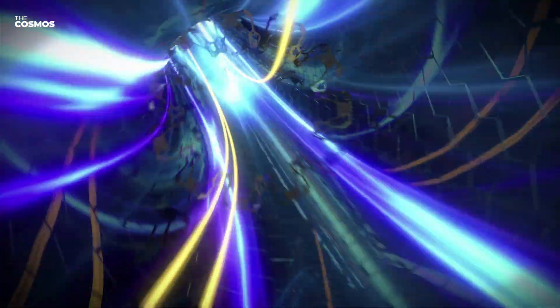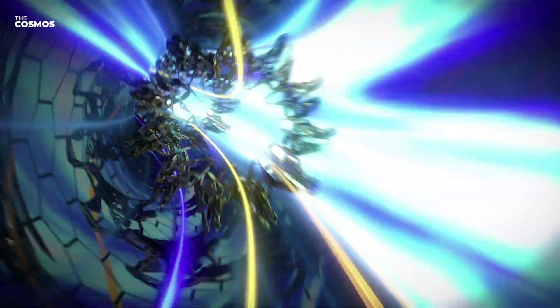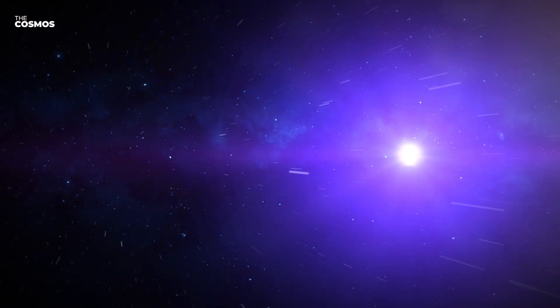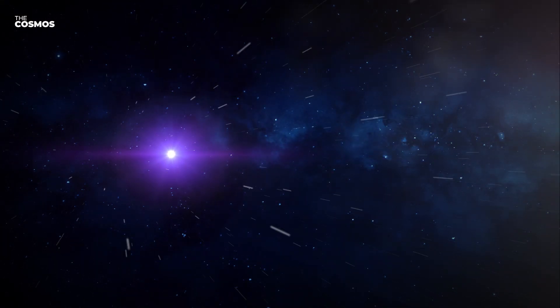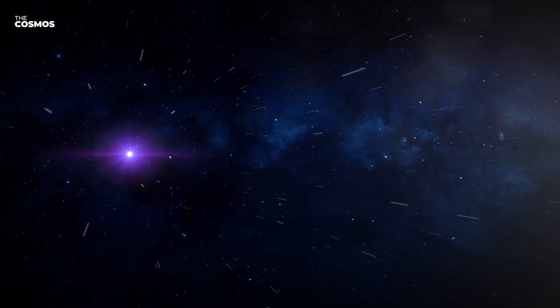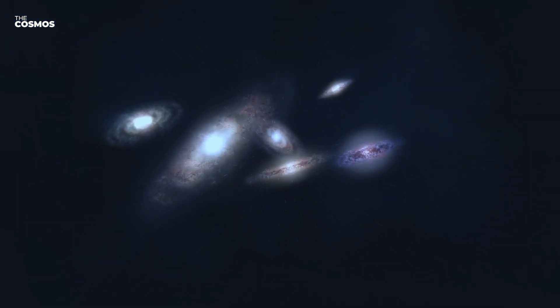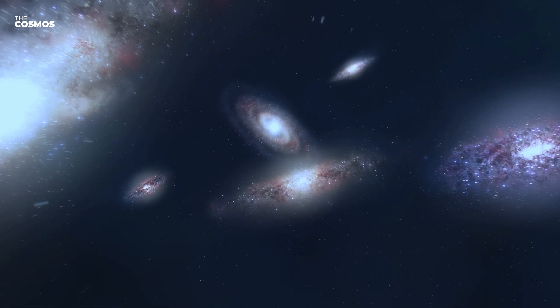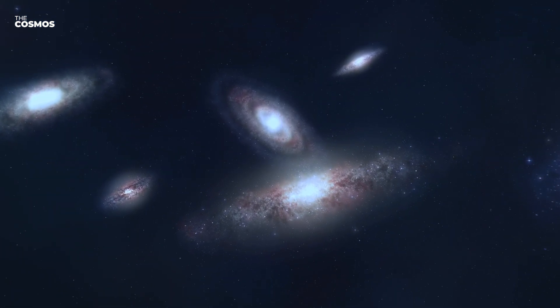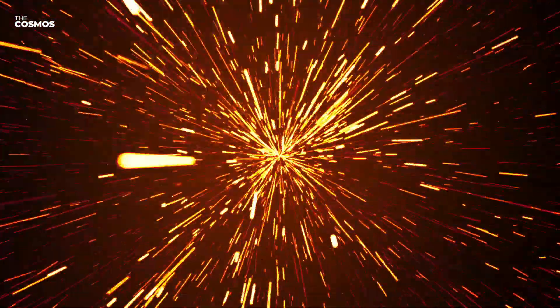When an object moves towards a light source at a significant fraction of light speed, the light waves from that source are compressed, leading to a blue shift. Conversely, moving away from a light source causes a redshift as the light waves stretch. Imagine gazing out from a spacecraft traveling at near light speeds. Stars and galaxies ahead would appear bluer, while those behind would take on a redder hue. This cosmic kaleidoscope is not just a visual marvel, but also a testament to the fundamental principles of wave physics.